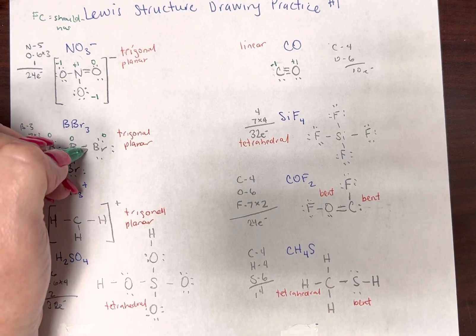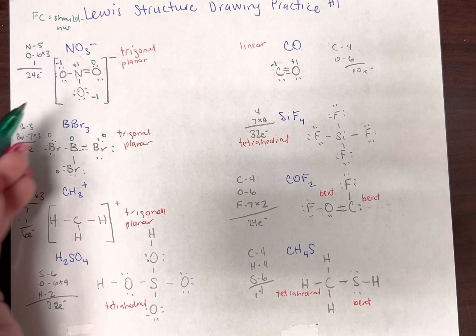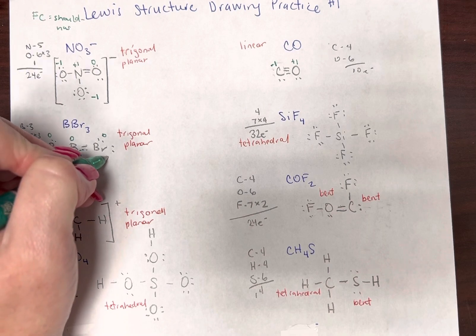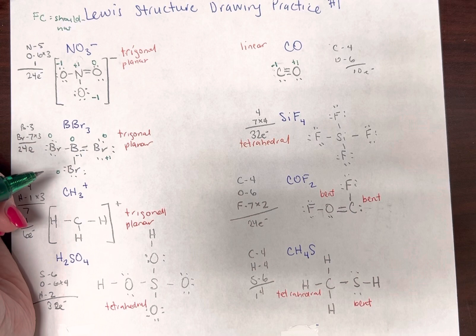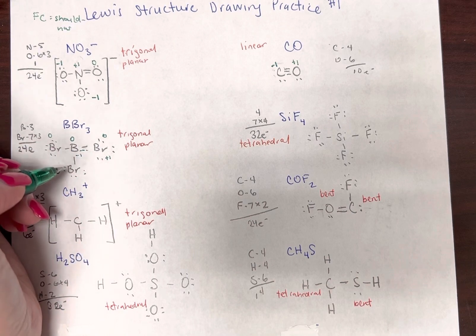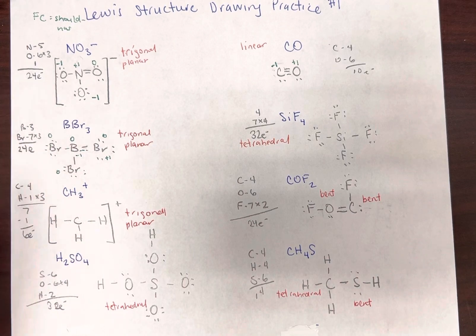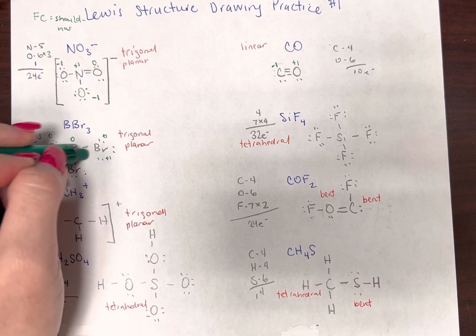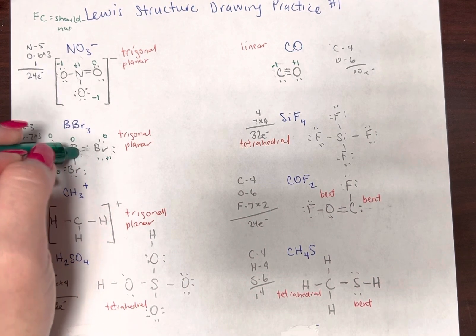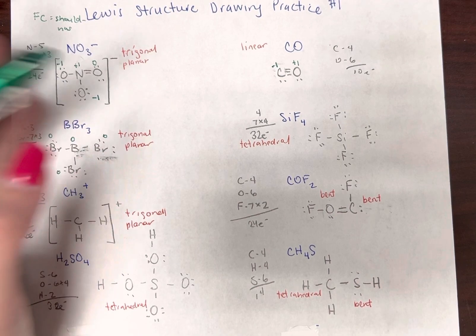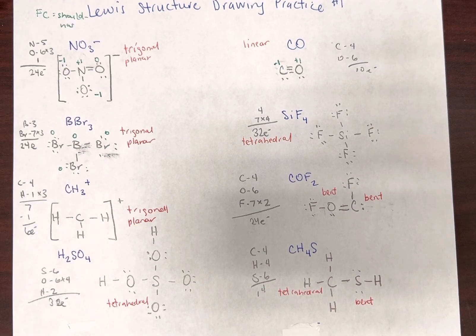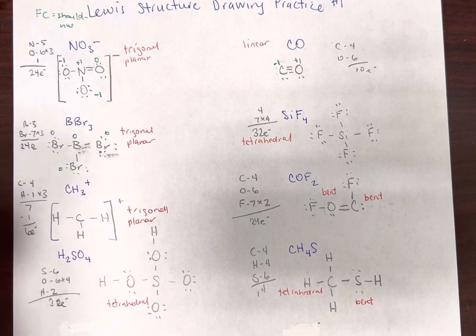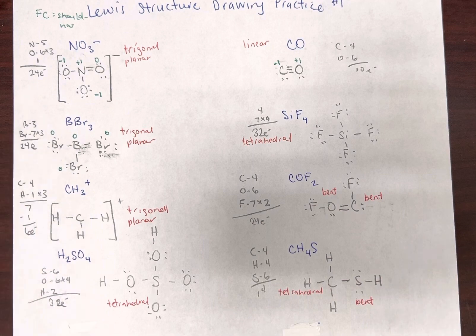So if you had drawn a double bond for the bromine, I'm just going to kind of do that. This is an erasable pen. So if you had done that, the bromine would be negative, or the boron would be negative one, and the bromine would be positive one. Bromine is more electronegative, it definitely doesn't need a positive. And so by using the knowledge that boron is okay with an incomplete octet, it helps set up a good structure with formal charges.